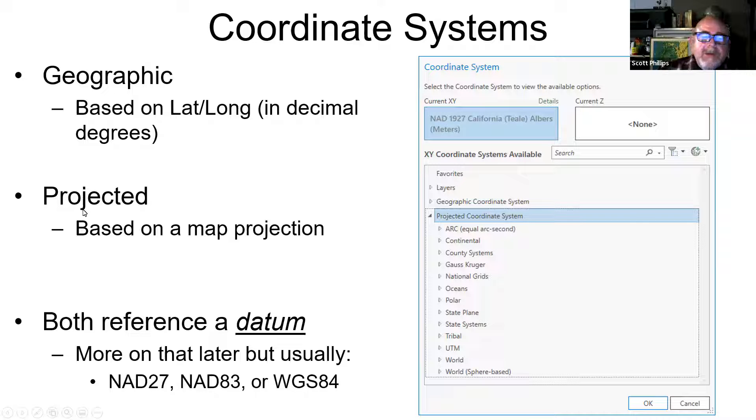But more often we use what's called a projected coordinate system that's based on a map projection where the x and the y are in the same scale. And whichever one we do, they also reference something called the datum. We'll come back, we'll circle back to that one, that's a little more complex. But usually from my experience working here in California, or in the United States in general, there's only three that we really need to know about. So I'll go over those briefly.